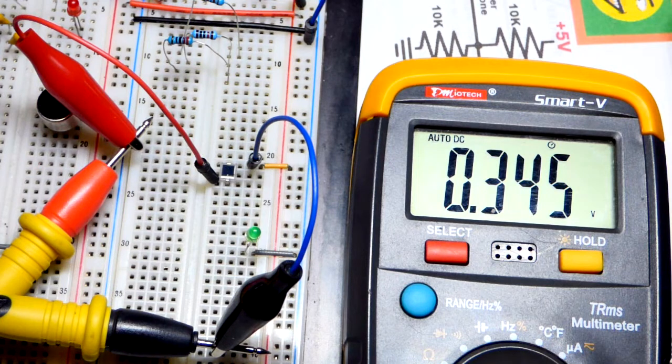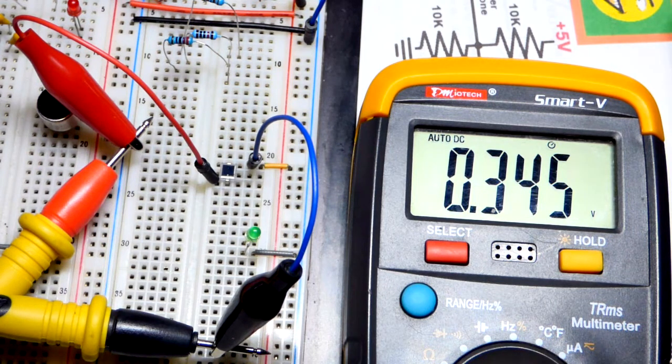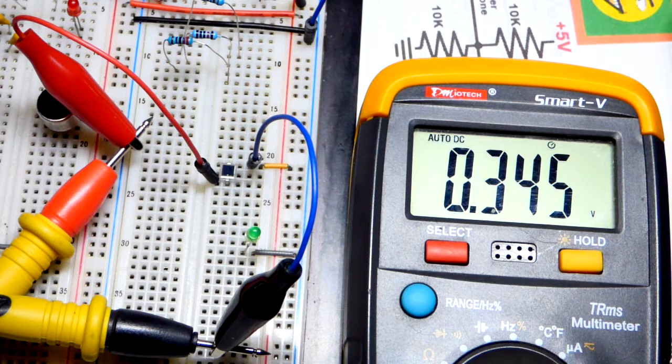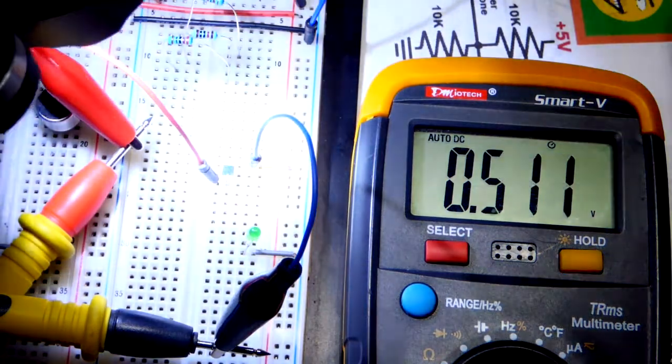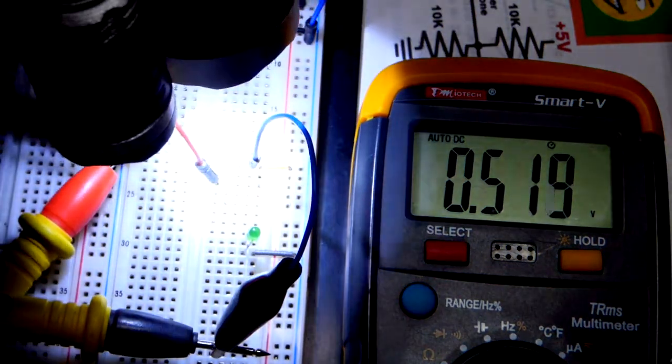And there you can see that we have a voltage there. It's about that voltage that was above the 5 volts. That's when we had it in series with a 10 kiloohm resistor.